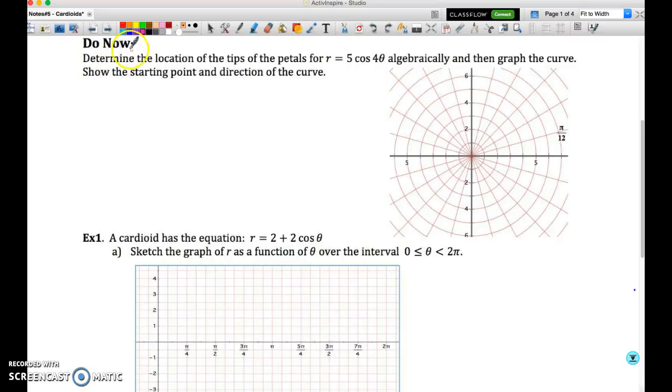And so we're starting with our Do Now. We have to determine the location of the tips of the petals and our relation which has been given in polar form, in terms of r and theta, is r equals 5 cos 4 theta. And this time we've been instructed to do it algebraically. Up until now we've been focusing on a graphical approach. And so I'll show you the algebraic setup and also the graphical relationship to it, and then we're going to graph our polar curve.